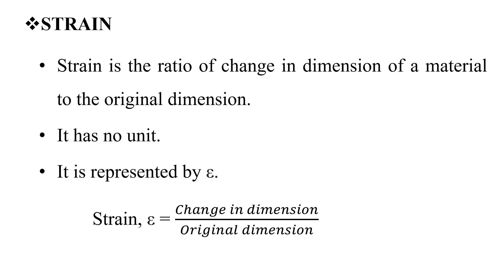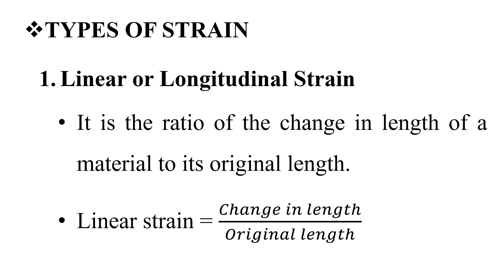What is strain? Strain is the ratio of change in dimension of a material to the original dimension. It has no unit and is less than one. It is represented by epsilon. Mathematically, strain epsilon is equal to change in dimension divided by original dimension.